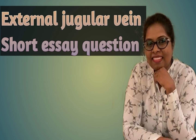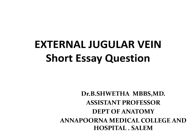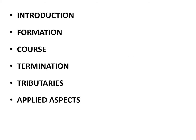Hello everyone. Today we are discussing the external jugular vein. This is a short essay question carrying five marks, so let us see how to present this answer. If this question is asked in the exam, you can present it under the following headings: introduction, formation, course, termination, tributaries, and applied aspects.